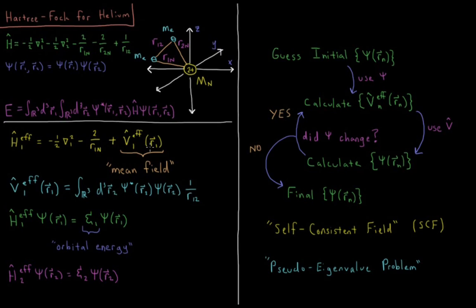This is called a mean field. At any given point in space, the repulsion felt by electron one depends on where electron two is, which would require a six-dimensional integral. What is much simpler is that at any location in space, we know what electron one feels on average — the field of electron two being spread over all space. So electron one is not explicitly feeling electron two at a specific location; it feels electron two through its spread-out charge density, which is the mean field presented by that other electron.